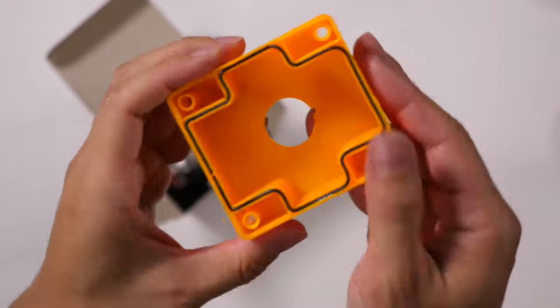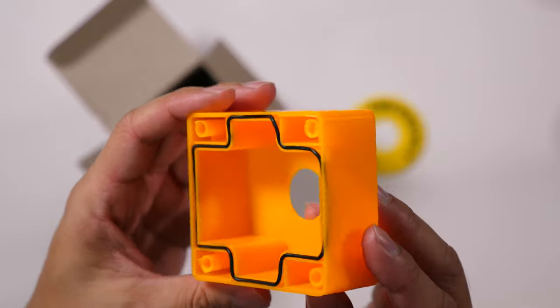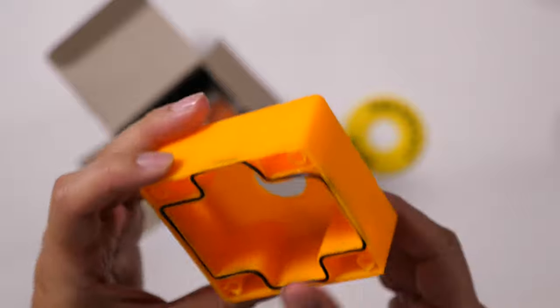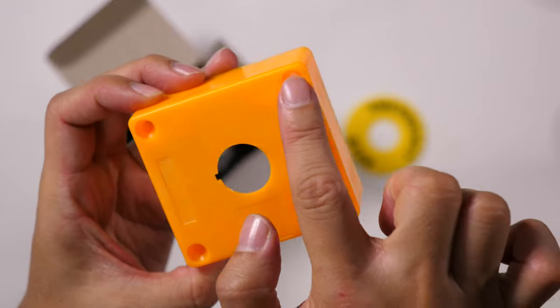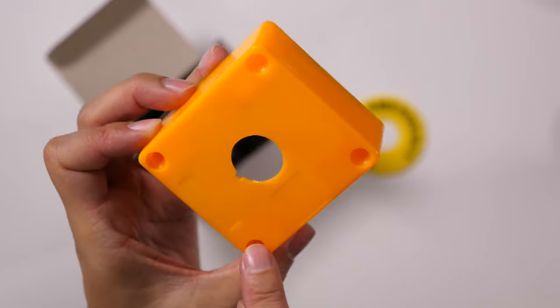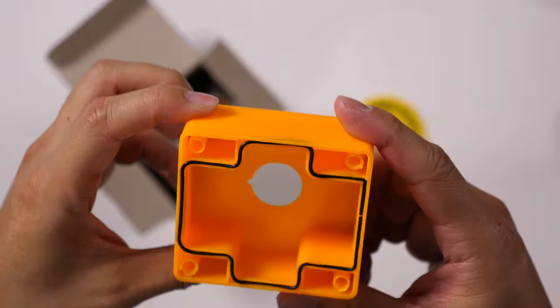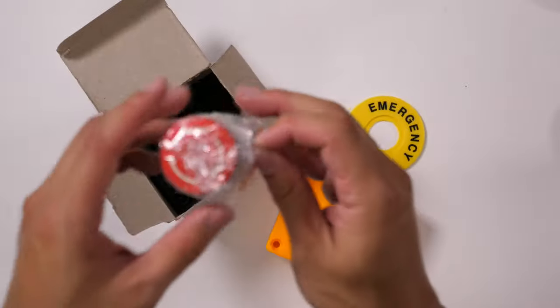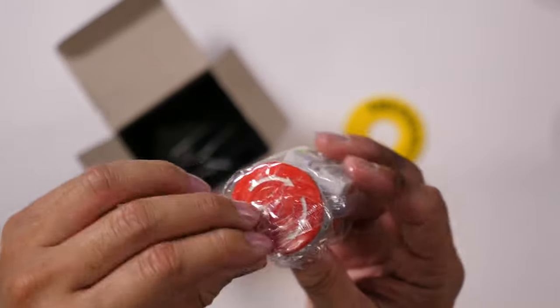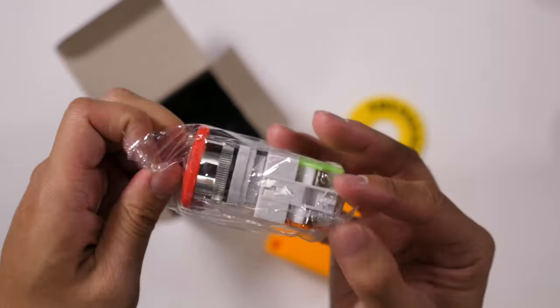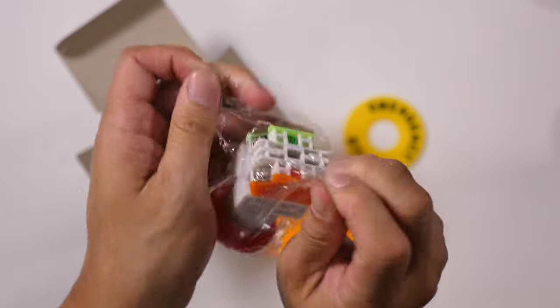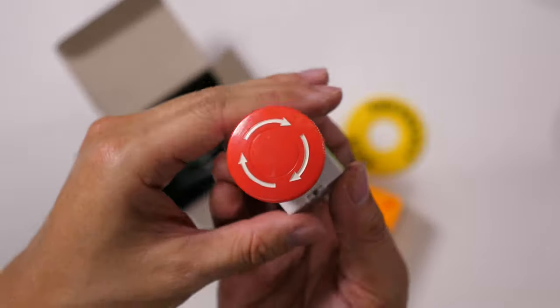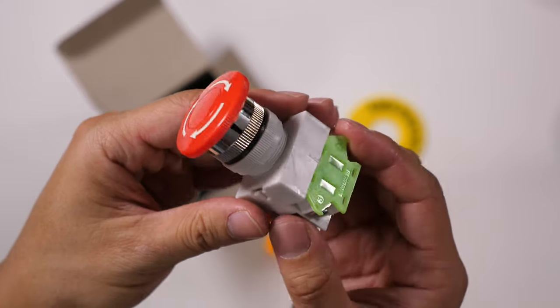That is the opening for the button to pass through. These are some screw holes, four of them, where you would secure the box together. Let's take a look at the button. It's wrapped in plastic, let's open that up. There you have your first look at the button.